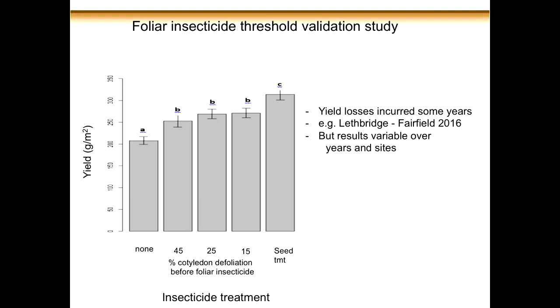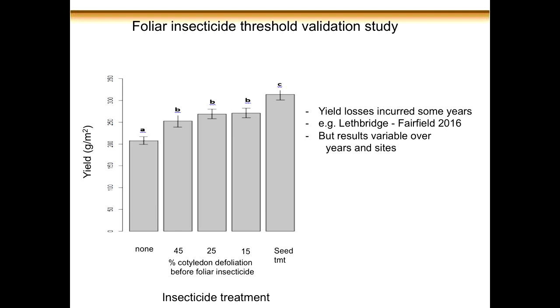Here is one more data set — I believe the Lethbridge site, 2016. This is the only test where we saw a significant difference: the seed treatment had much higher yields than the control. The treatments refer to the percentage of cotyledon defoliation at which we sprayed the insecticide: 45%, 25%, and 15%. The foliar spray helped to mitigate the damage and protect the yield to some extent, but not quite to the level of the seed treatment.